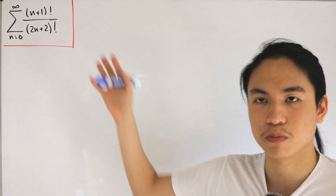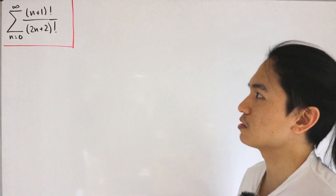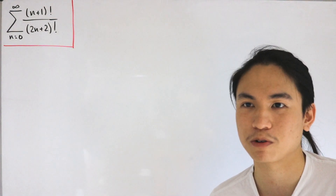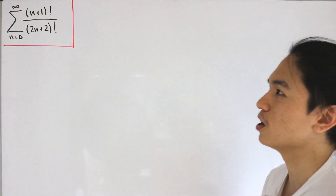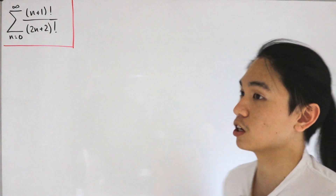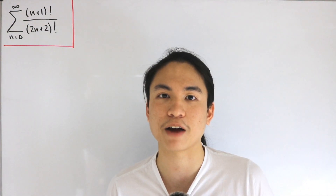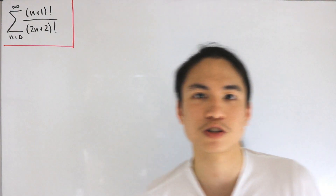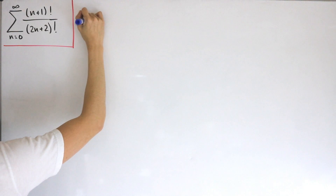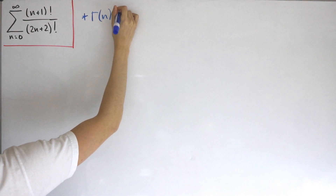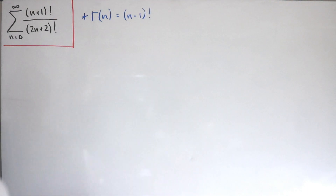We can put in that substitution for the gamma function, which leaves us the question of where to go from there. We'll actually be using some calculus, integrals, and a special function that comes up at the end to simplify everything. So let's jump right in. The definition for factorials is that Γ(n) equals (n-1)!.